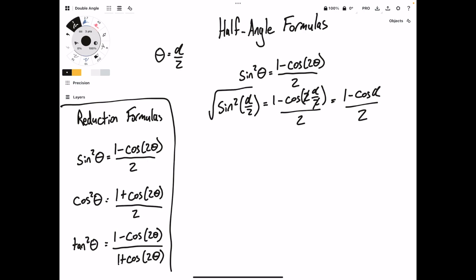The final step for sine is to take the square root of each side, and we are left with the sine of alpha over 2 is equal to plus or minus the square root of 1 minus cosine alpha over 2. So let's take this and save it off to the bottom.